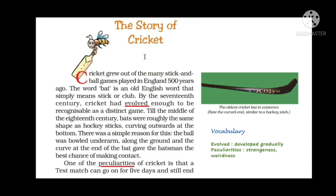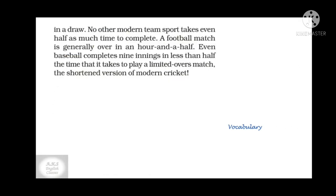One of the peculiarities — peculiarities means strangeness — of cricket is that a test match can go on for five days and still end in a draw, meaning with no result. No other modern team sport takes even half as much time. A football match is generally over in an hour and a half. Even baseball completes nine innings in less than half the time it takes to play a limited overs match, the shortest version of modern cricket.